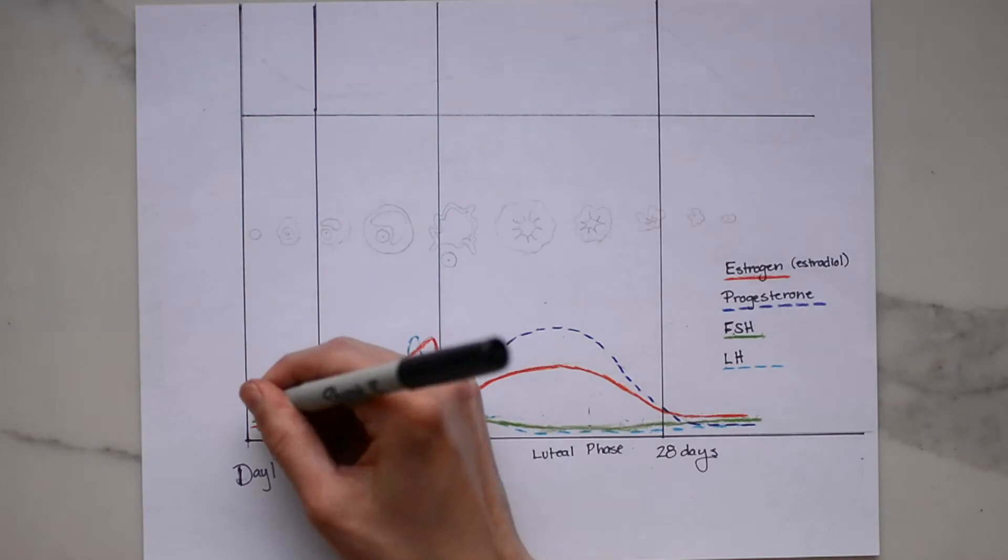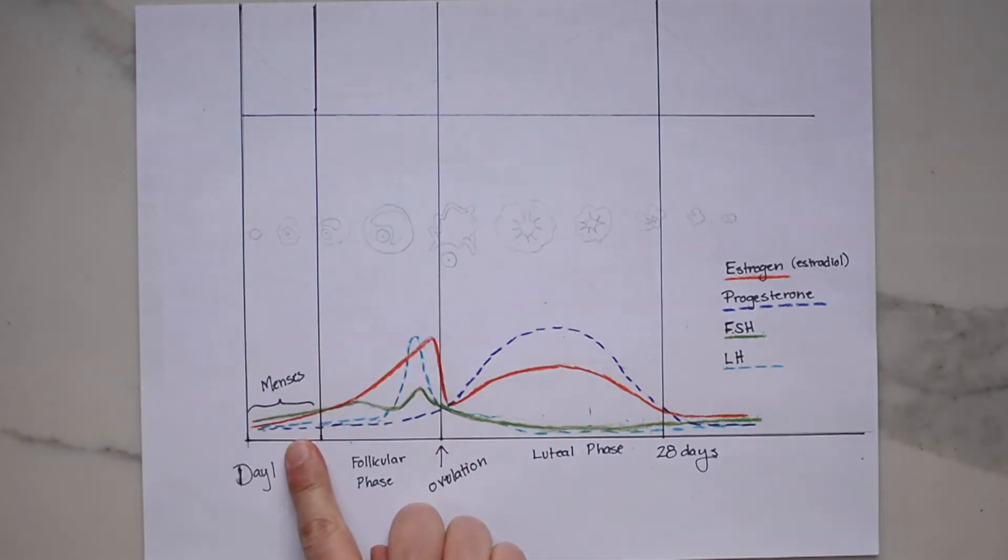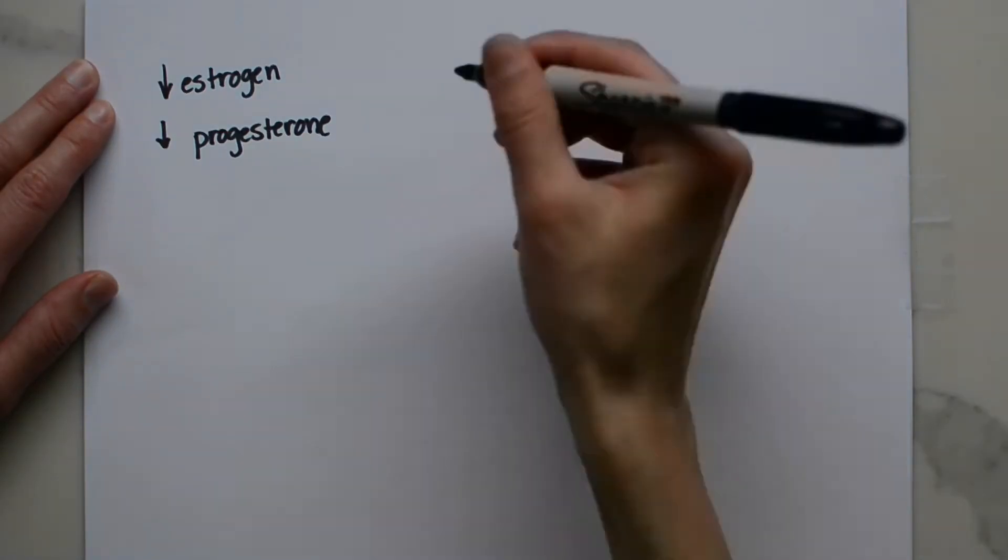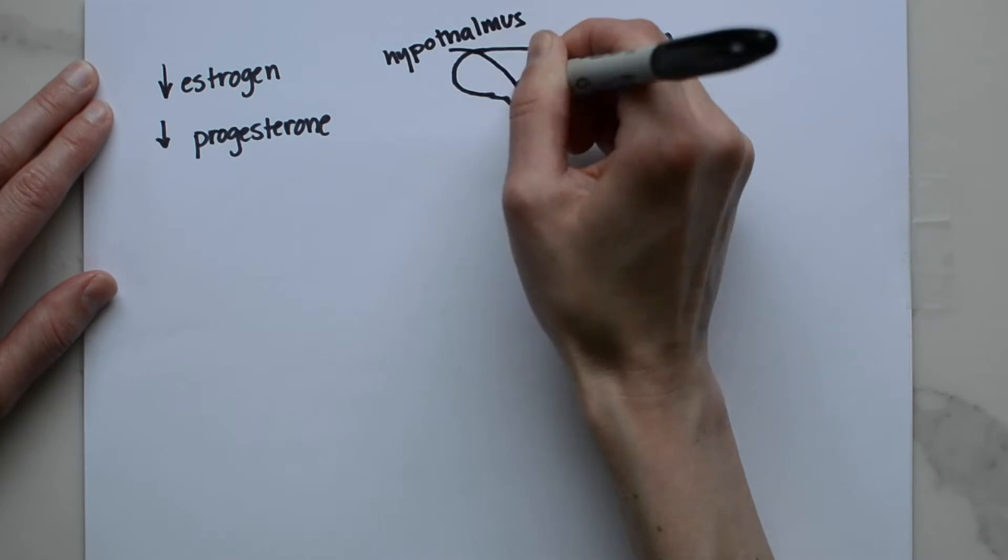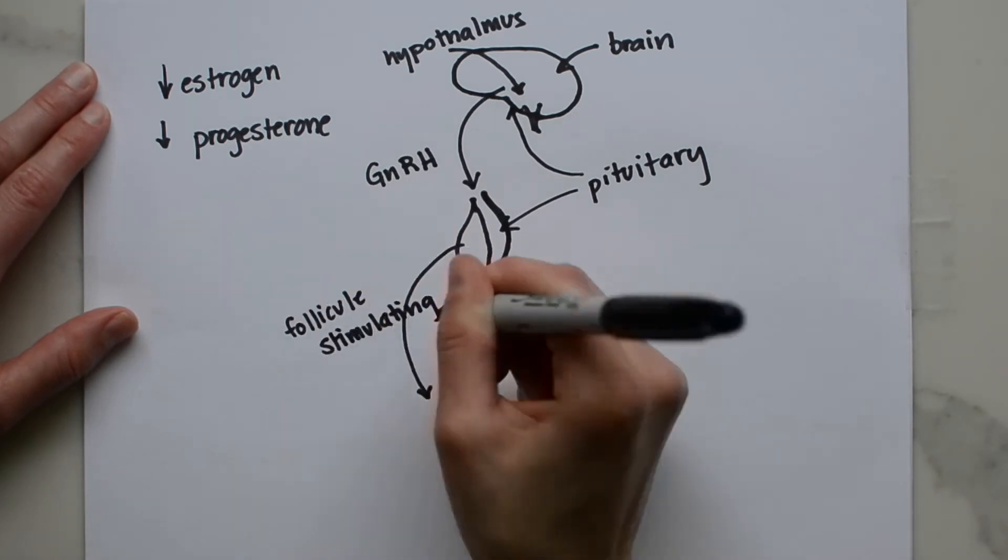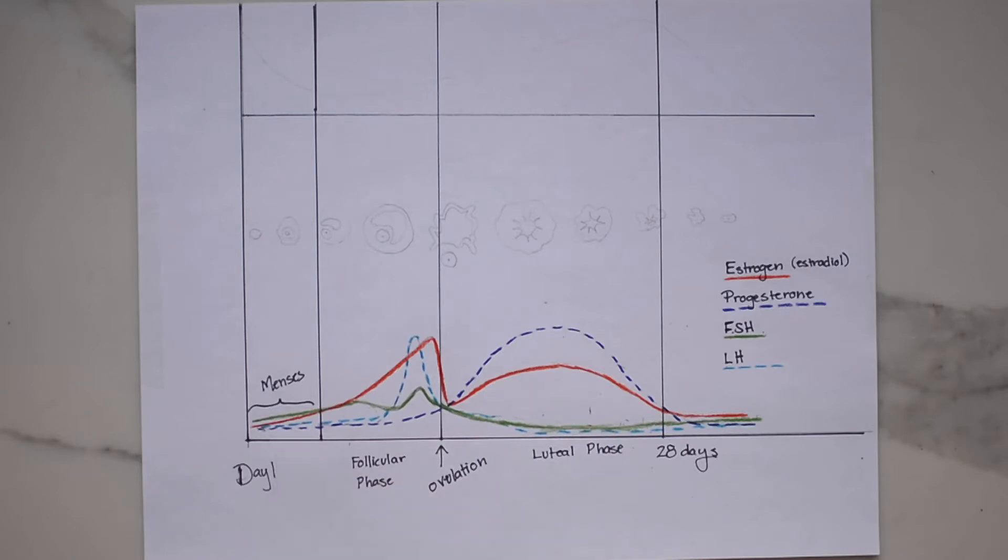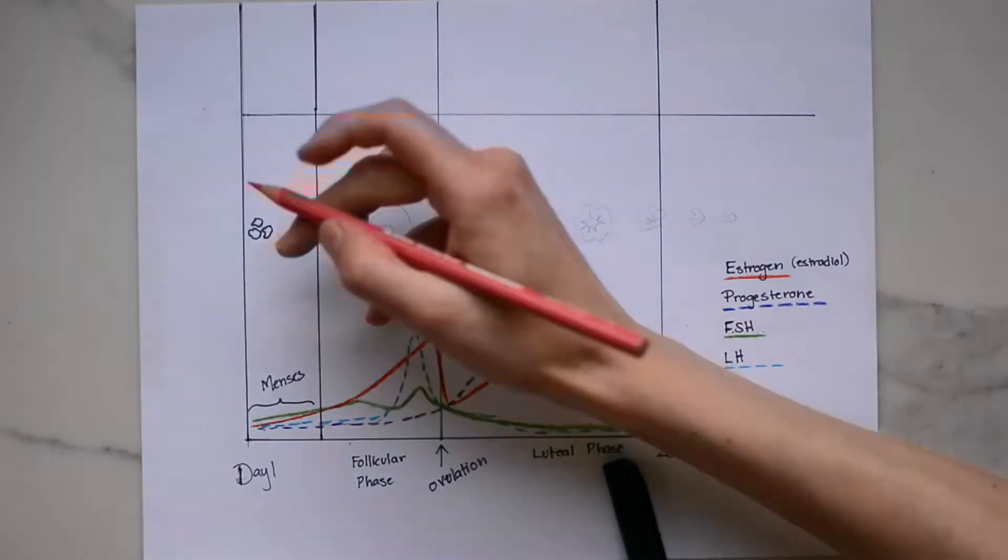Starting in the early follicular phase, this is right when you're starting your period, estrogen and progesterone concentrations are low. And because these hormones are low, we start to see an increase in a hormone called gonadotropin releasing hormone, which is released from a part of our brain called the hypothalamus. And this signals to our pituitary, which is a small pea-sized gland in the brain, to release follicle stimulating hormone. So you can see this on the chart. Now follicle stimulating hormone is responsible for the recruitment of the next group of developing follicles in the ovary.